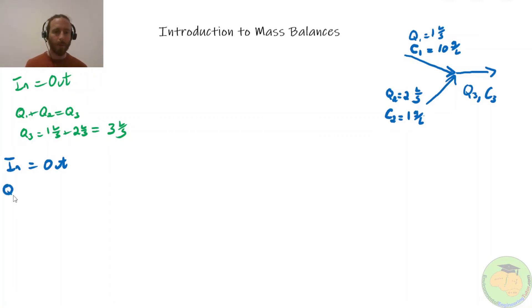Let me write it out here. So in we have q1 c1 plus q2 c2 equals q3 c3. We fill in the values. 1 liter per second times 10 grams per liter plus 2 liters per second times 1 gram per liter equals 3 liters per second times c3. So what I was saying about the mass flow rate is that we have liters per second and grams per liter. So liters cancel out. That leaves us with units of grams per second. Same thing here. Liters cancel out.